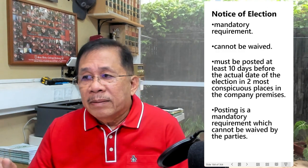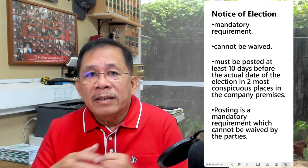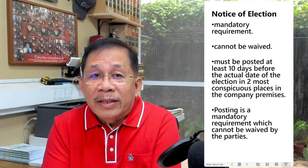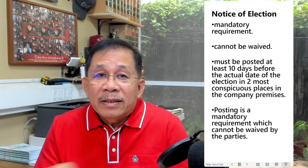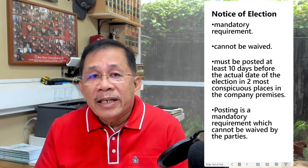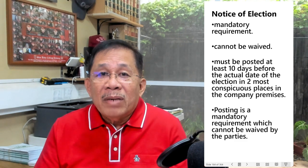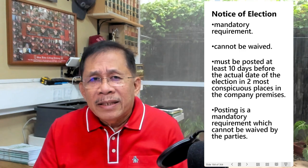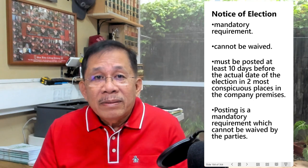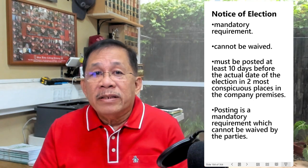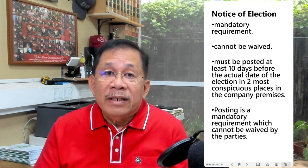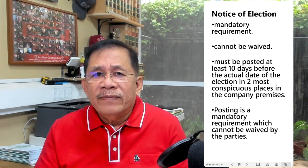If the certification election order becomes final and executory, the med-arbiter will set the date of election. There must be a notice of election — this is a mandatory requirement which cannot be waived. The notice of election must be posted at least 10 days before the actual date of election in two most conspicuous places in the company premises. This is a mandatory requirement which cannot be waived by the parties.